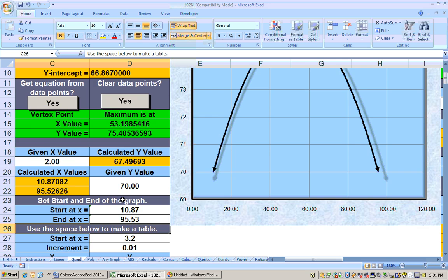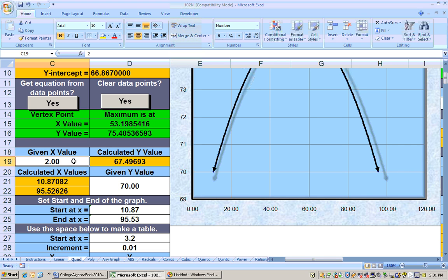So, and again, we could make tables down below if we wanted to, but really putting in an x to get a y, or for example, if we said, what's the average life expectancy for somebody born in 1990?